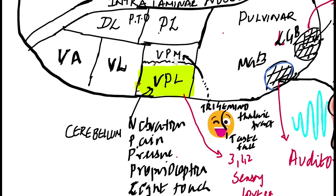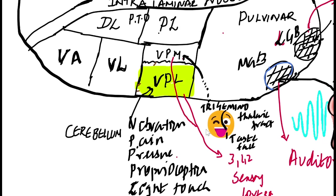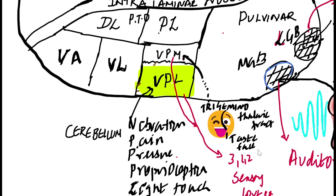Where do we go from VPM nucleus? The afferent is the sensory cortex. That's the end of VPM.